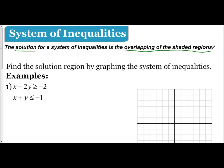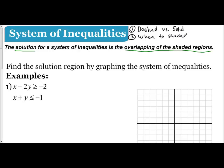Remember a few things when solving a system of inequalities. First, do we use a dashed versus solid line? Dashed lines are for strict less than or greater than, and solid lines are for less than or equal to or greater than or equal to. Then ask ourselves where do we shade — when it says y is greater than or y is less than, you ask above or below. When it says x is less than or x is greater than, you ask left or right.